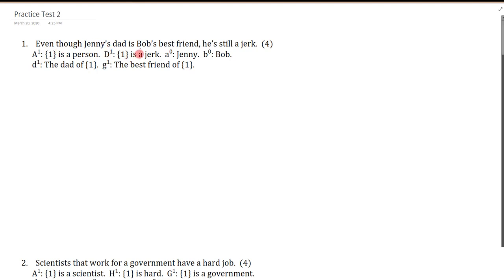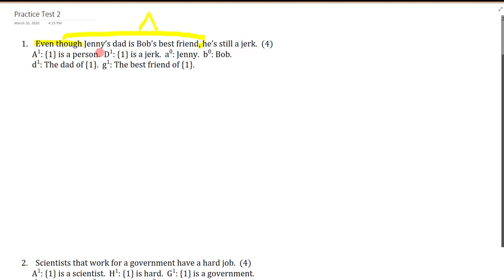Even though Jenny's dad is Bob's best friend, he's still a jerk. We recognize the phrase 'even though' — that just means 'and.' Jenny's dad is D of A (the dad of Jenny). Bob's best friend is G of B (the best friend of Bob).